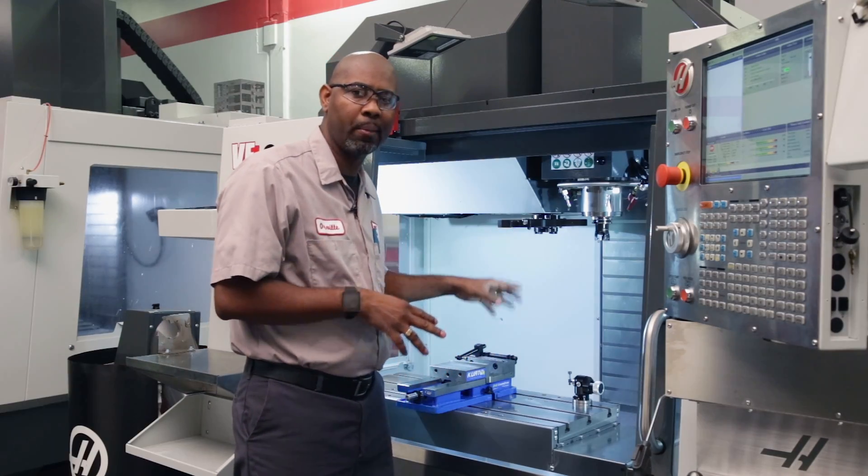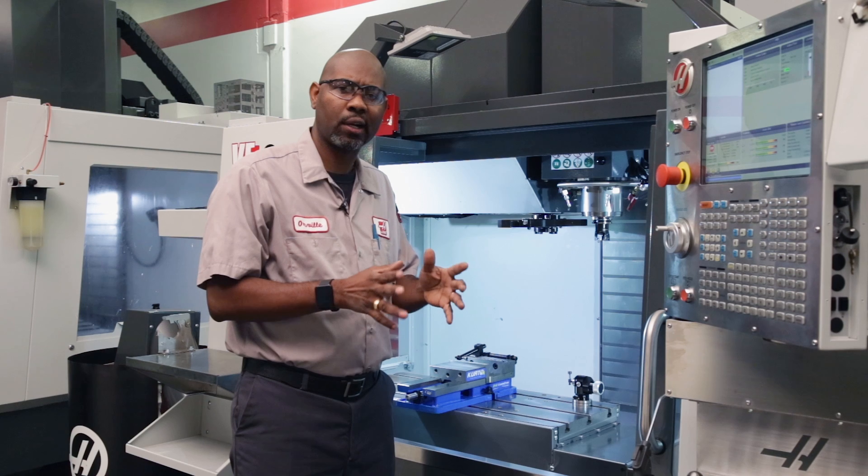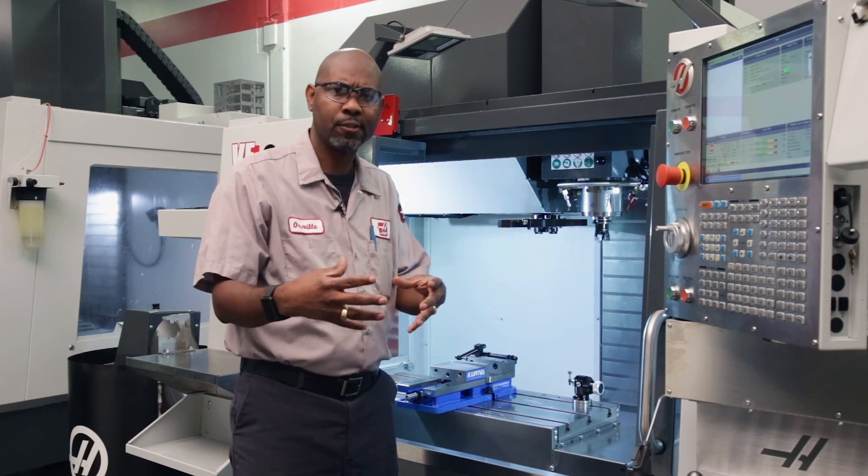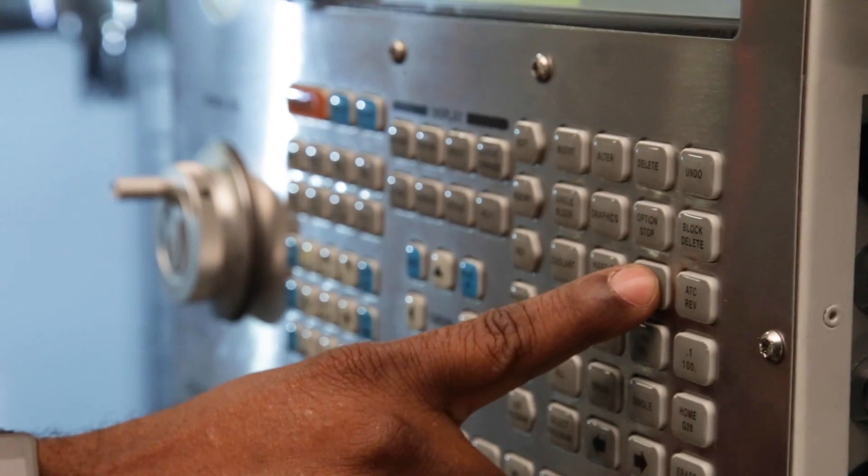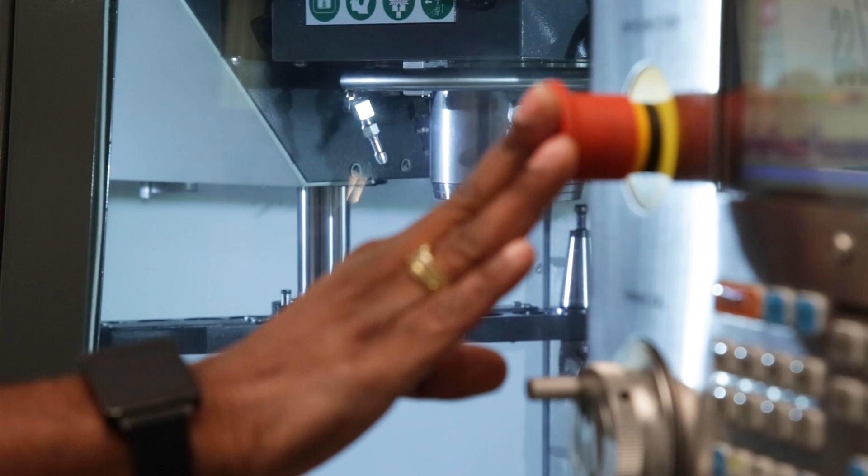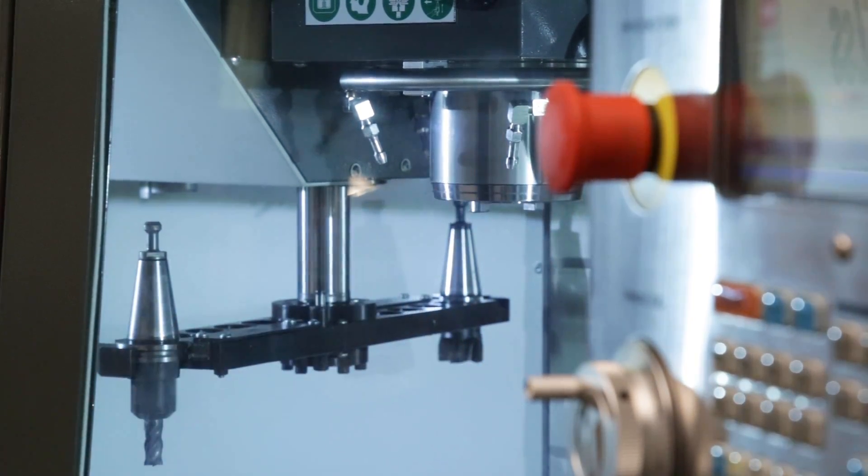Now, let's get the double arm in a position where we can check the clearance between the tool holder and the retaining fingers. We'll press 5% rapid to slow things down a bit, then command a tool change and press e-stop when the double arm is at the bottom of its travel.